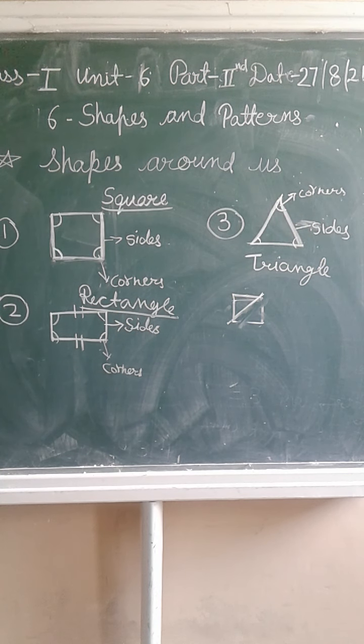Now look at the exercise — identify many shapes. Shape A — this is a gate. The gate's shape is Rectangle because opposite sides are equal, and the gate has four sides and four corners.